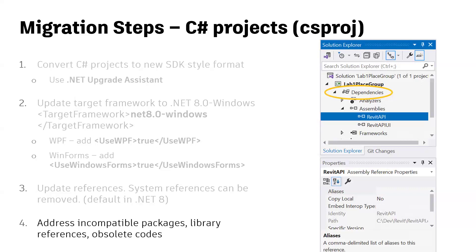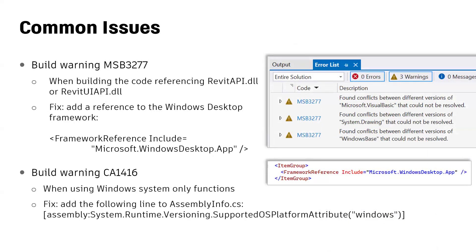Review the packages used by your project and make sure they are compatible with .NET 8; if not, update them. When building your add-in against Revit 2025 and .NET 8 for the first time, you may see some common build warnings. MSB3277 occurs if your add-in and Revit target different versions of the same reference, and can usually be fixed by adding a framework reference to Microsoft.WindowsDesktop.App. Build warning CA1416 occurs if your add-in uses .NET functions that are Windows-only. Since .NET 8 is now cross-platform, the compiler warns you about Windows-only functions. You can resolve this by updating your AssemblyInfo.cs to include the SupportedOSPlatform attribute.